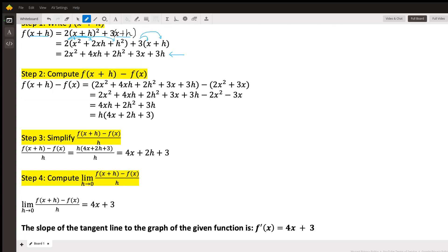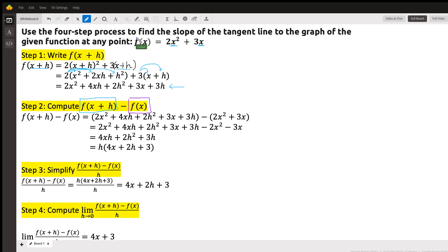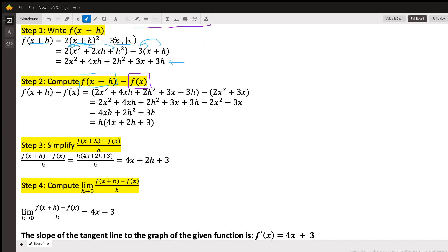For our second step, what we're going to do is we're going to find the difference of what we just found, which is f(x + h) - f(x). Now remember that when it says f(x), it's just talking about the expression that we were just given. That's our original expression right over here. So we're going to just subtract those.